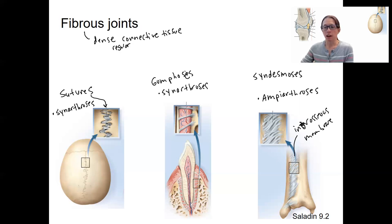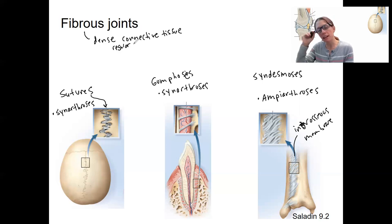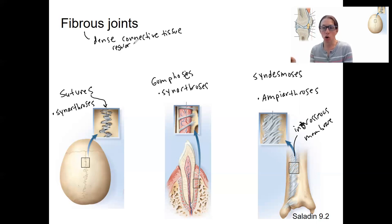Those are the three types of fibrous joints. They are always made of dense connective tissue, but their examples can be either synarthroses — no movement — or amphiarthroses — very little movement.